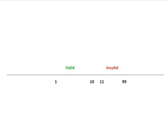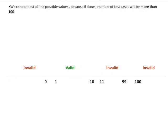On entering values 100 and above, the ticket number defaults to a 2-digit number. On entering values 0 and below, the ticket defaults to 1. We cannot test all the possible values, because if done, the number of test cases will be more than 100. To address this problem, we use equivalence partitioning.